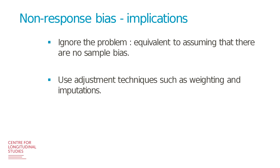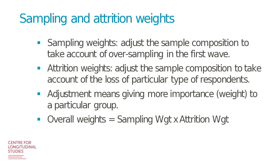So what should we do about attrition? Well, first, you could ignore the problem — however, this is equivalent to assuming there is no sample bias, which is of course a wrong assumption. Secondly, you could use adjustment techniques such as weighting and imputation. In MCS, we have so far produced attrition weights, which need to be used in conjunction with the sampling weights. So in MCS we have two sets of weights: the sampling weights, which adjust the sample composition to take account of the complex design, and the attrition weights.